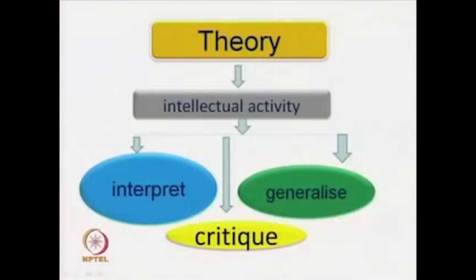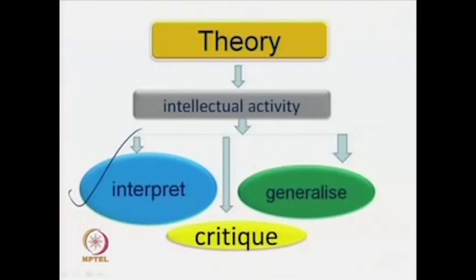Theory may be described or defined, at this initial stage, as an intellectual activity whose main job is these three things: to interpret cultural data — by cultural I mean all cultural forms, may be a literary text, a sociological text, a social situation or cultural practice. The job of theory is threefold: to interpret, to make certain generalizations by the use of concepts — our next module is therefore devoted to key concepts in cultural studies with which we build theories — and finally, to offer a critique.